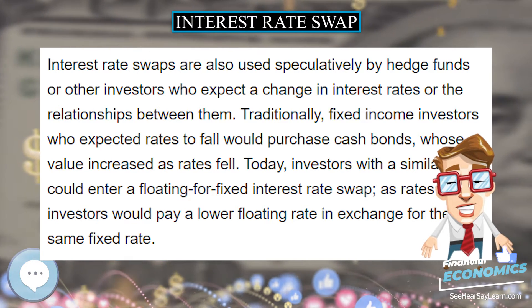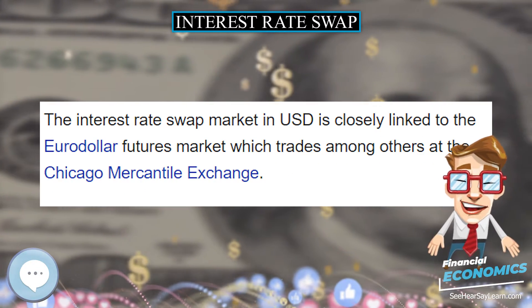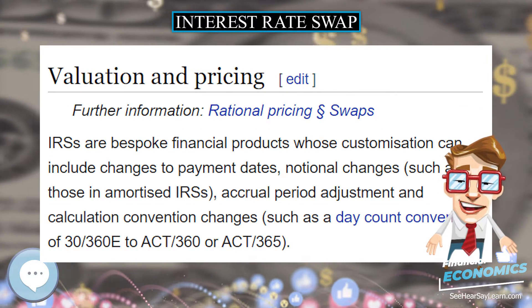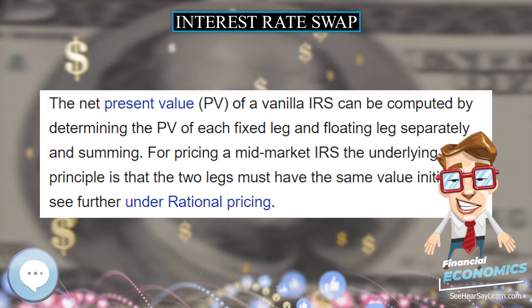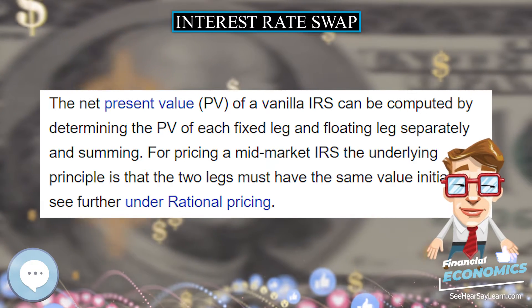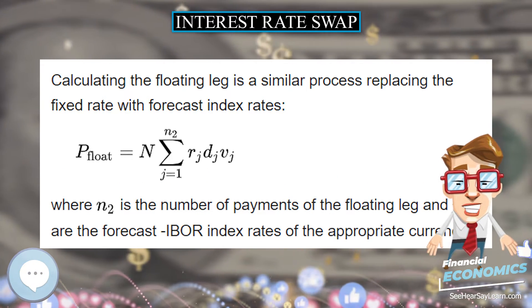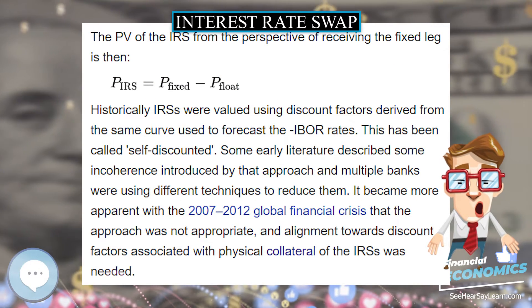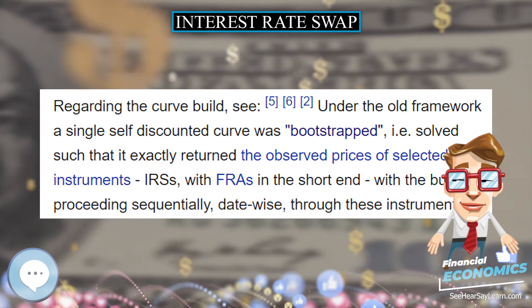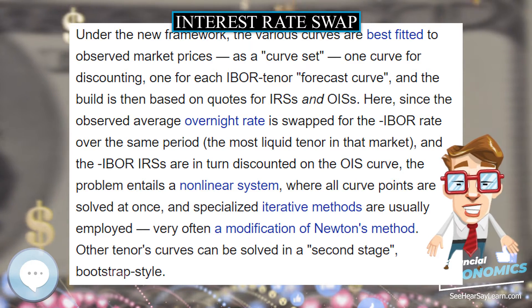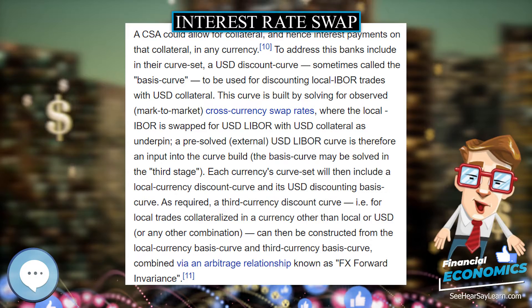IRS's are bespoke financial products whose customization can include changes to payment dates, notional changes such as those in amortized IRS's, accrual period adjustment and calculation convention changes, such as a day count convention of 30/360E to Act/360 or Act/365. A vanilla IRS is the term used for standardized IRS's. Typically these will have none of the above customizations, and instead exhibit constant notional throughout, implied payment and accrual dates, and benchmark calculation conventions by currency. A vanilla IRS is also characterized by one leg being fixed and the second leg floating referencing an IBOR index. For pricing a mid-market IRS, the underlying principle is that the two legs must have the same value initially.